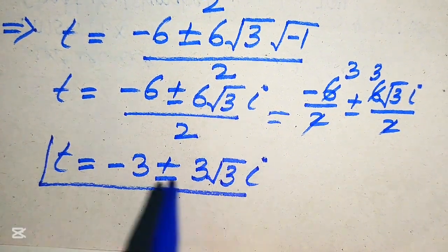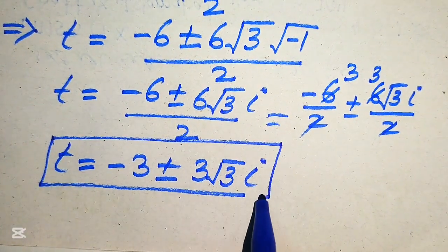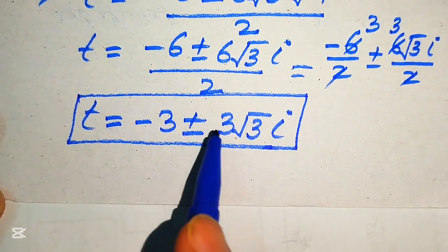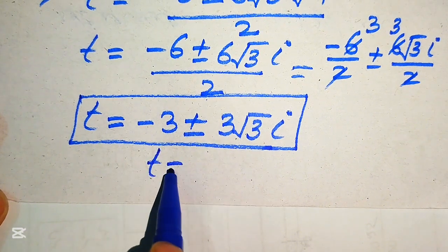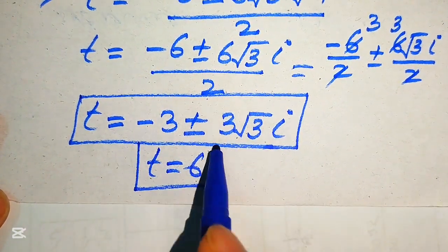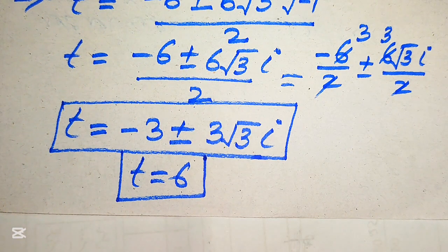These are the two complex roots of the given equation. Finally, the three roots are: the two complex roots t equals negative 3 plus or minus 3 root 3 iota, and the one real root t equals 6. This is the final answer. Thank you so much for watching this video — please subscribe to my channel for more exciting videos!